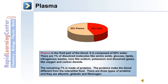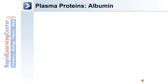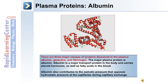There are three types of proteins in plasma: albumin, globulin, and fibrinogen. The major plasma protein is albumin. It's a major transport protein, and it carries steroid hormones as well as fatty acids in the blood. Albumin also contributes to the osmotic pressure of blood, and this opposes the hydrostatic pressure at the capillaries during capillary exchange.